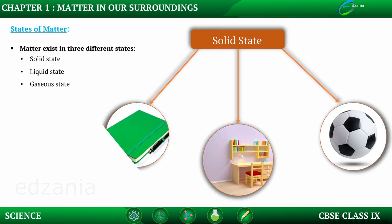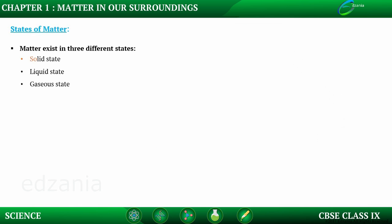The example of solid state as shown in the figure is a notebook and a pen. Other examples of solid state are your pencil box, chair, table — anything around you that has definite shape and volume comes under solid state.